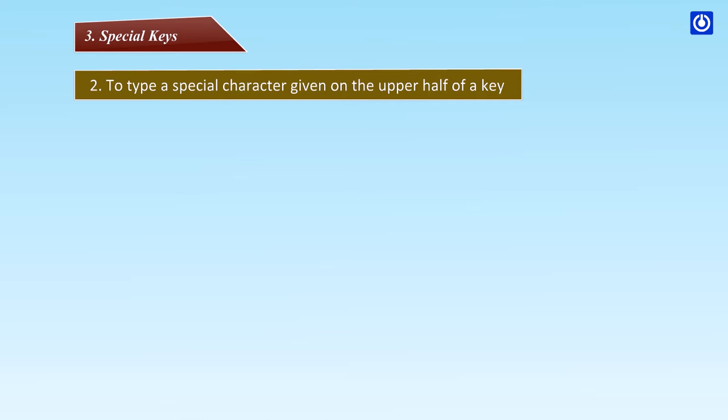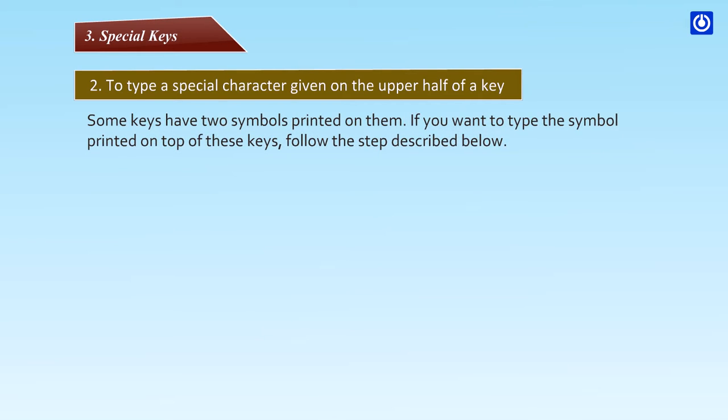To type a special character given on the upper half of a key: Some keys have two symbols printed on them. If you want to type the symbol printed on top of these keys, follow the step described below.